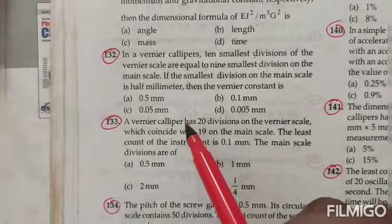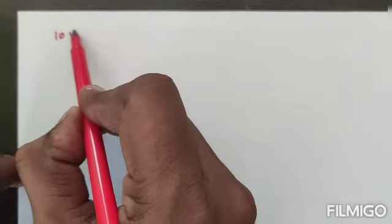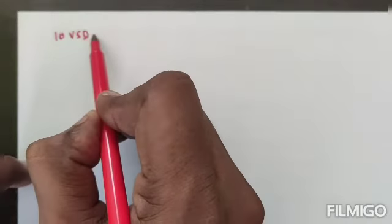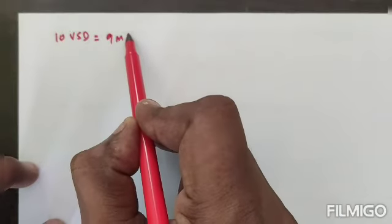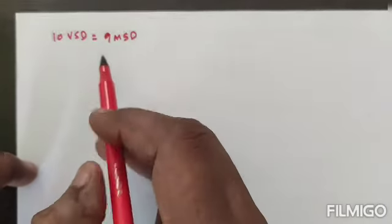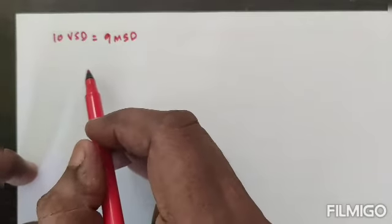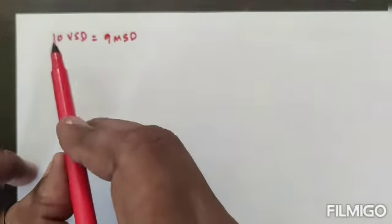So let's find the solution. Listen, in this question, 10 divisions of vernier scale equals 9 divisions of the main scale. This is given information. Then one more thing: each division on the main scale, that is, one MSD value, is given as 0.5 millimeters.